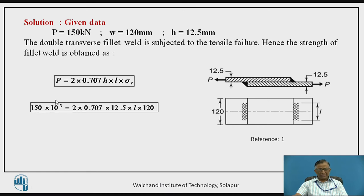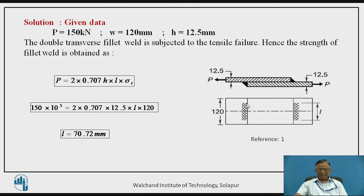The joint has to sustain 150 kN load, so we take this as the P value and solve for L. L obtained is 70.72 mm. This is the way we can design the required parameter of the joint — that is, the length — and the solution is obtained.